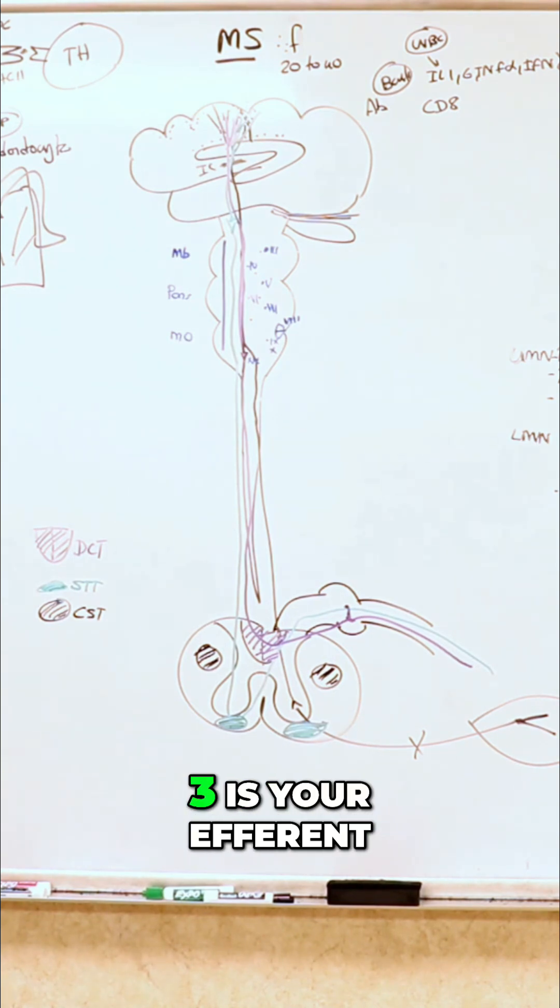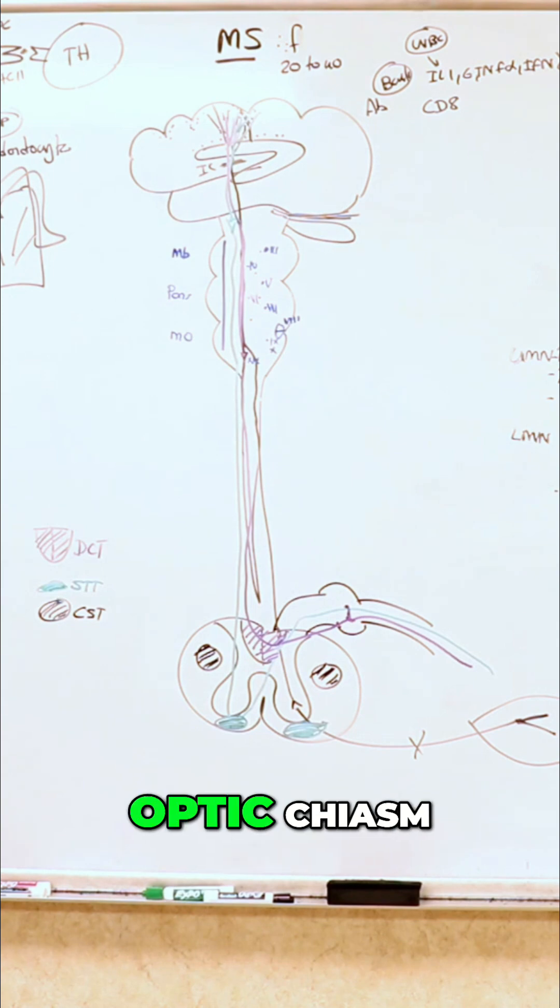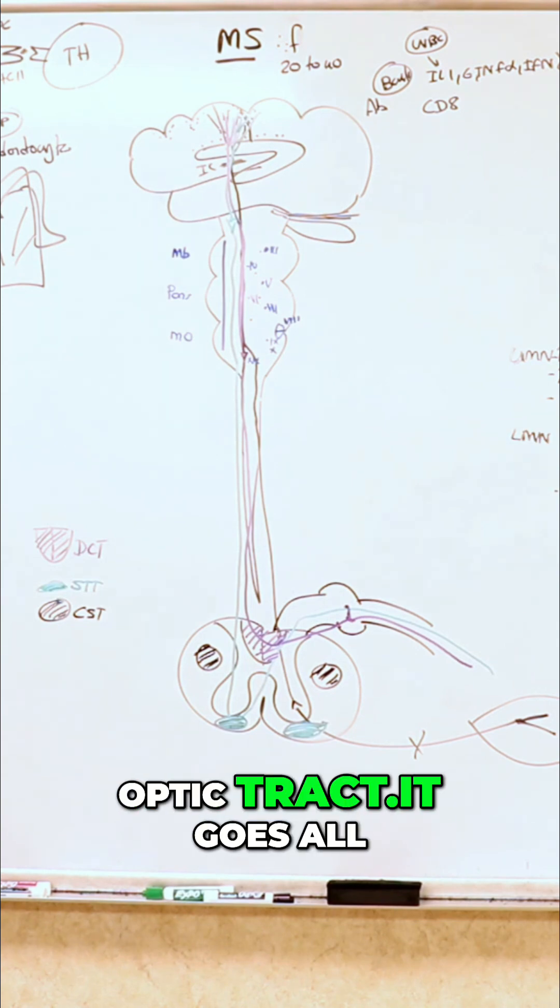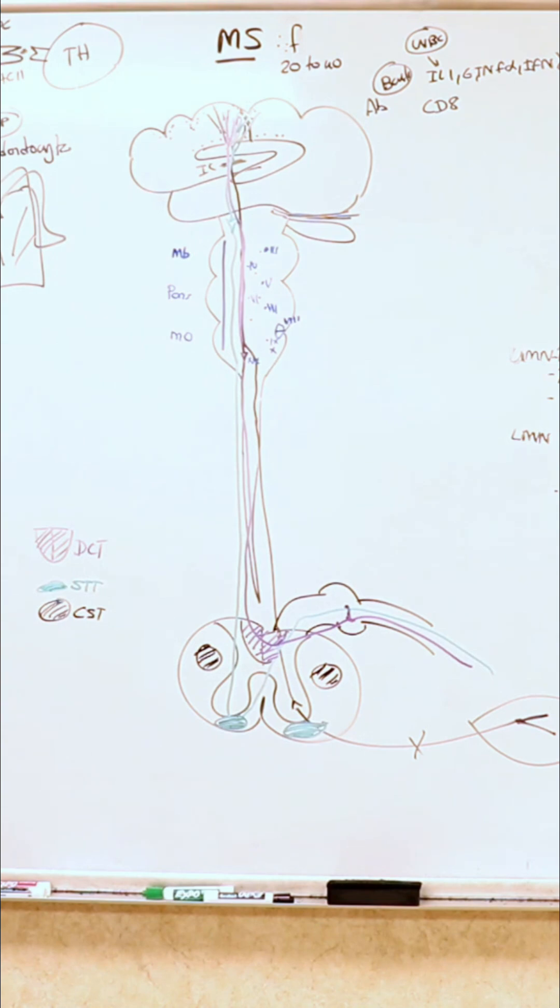So optic nerve is important in your pupillary reflex because how does it work? Two is your afferent, three is your efferent, but the connection is like this. What happens is you have your second optic nerve, optic chiasm, optic tract, it goes all the way here to something known as your pretectal nucleus.